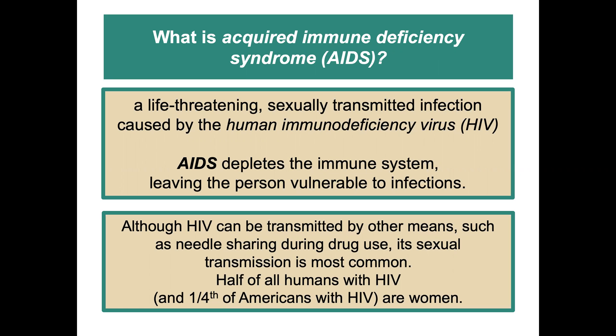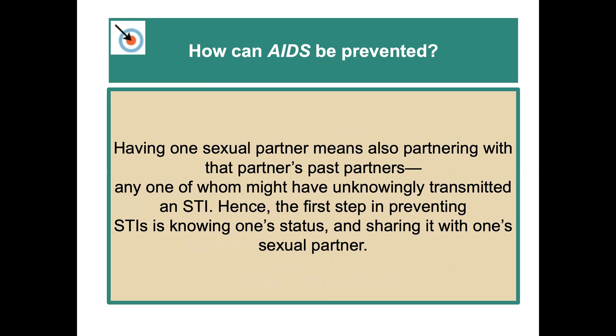Although HIV can be transmitted by other means, such as needle sharing during drug use, its sexual transmission is most common. Half of all humans with HIV and one fourth of all Americans with HIV are women. Having one sexual partner also means partnering with that partner's past partners, any one of whom might have unknowingly transmitted an STI. So the first step is to know the status of your partner.